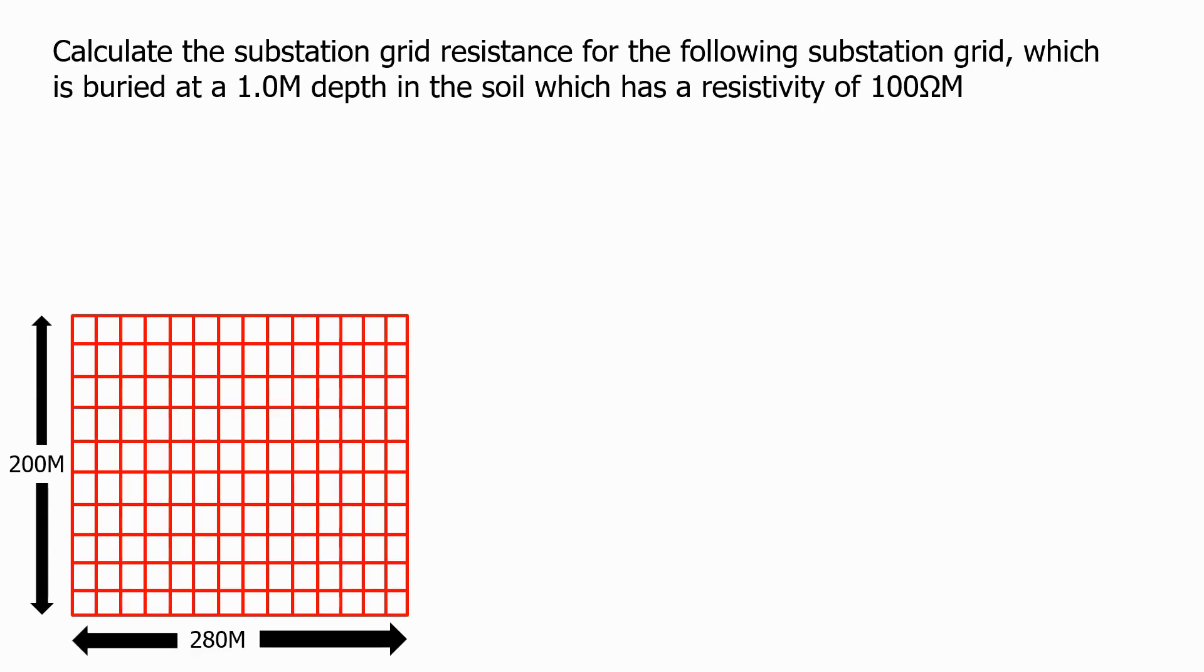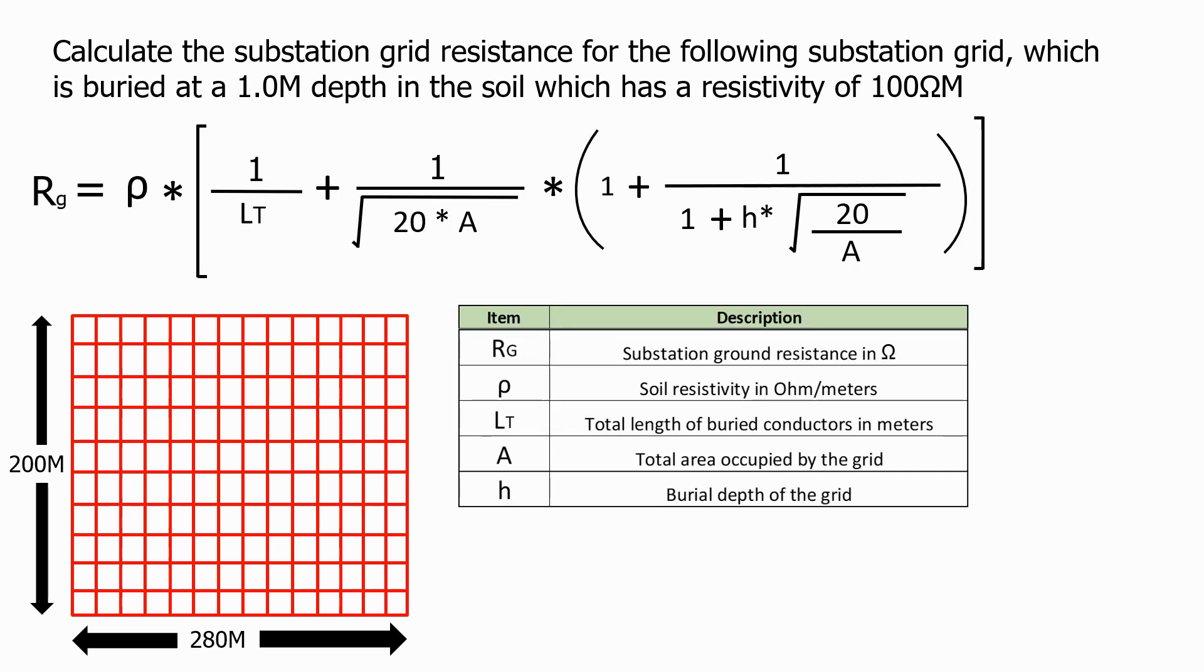Let's do a worked example. Calculate the substation grid resistance for the following substation grid, which is buried at a 1.0 metre depth in the soil which has a resistivity of 100 ohm metres. Here's our standard formula for the grid resistance.